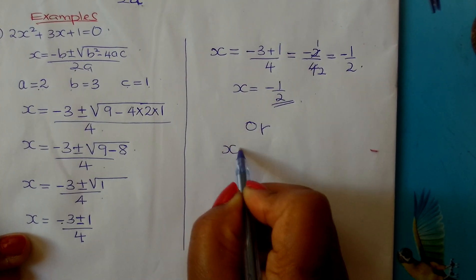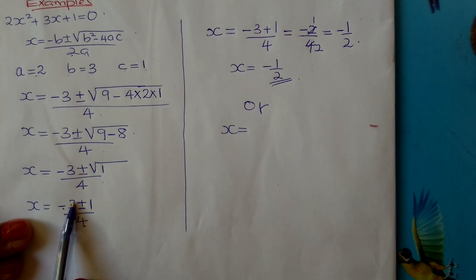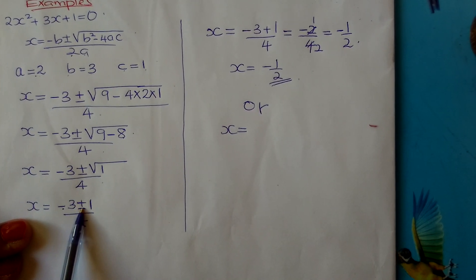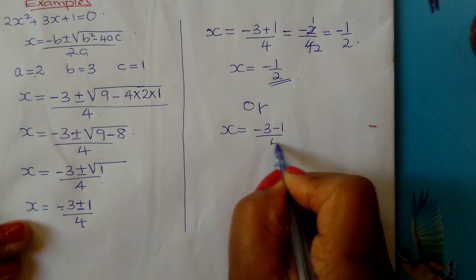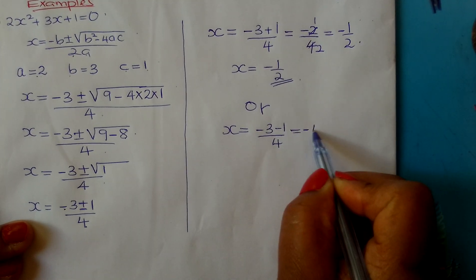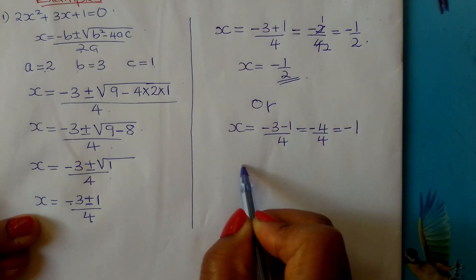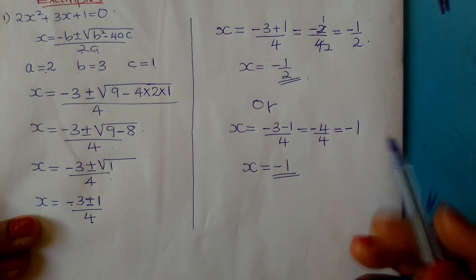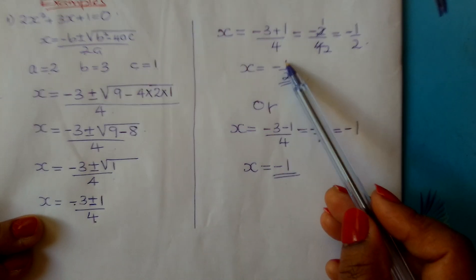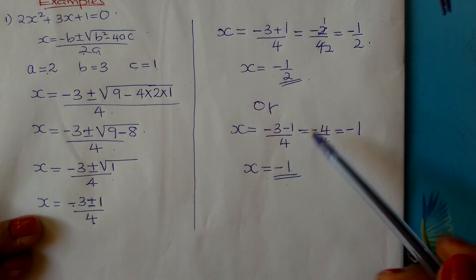Or, you come and take the minus sign, so x equals minus 3 minus 1, divided by 4. This gives us minus 4 divided by 4, which gives us minus 1. So your second value of x is minus 1. Therefore, x is either negative one half or x equals negative 1.